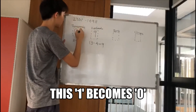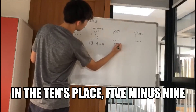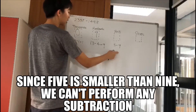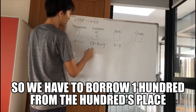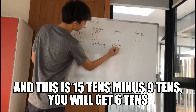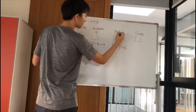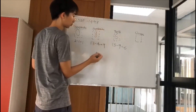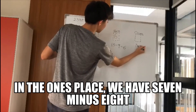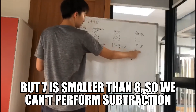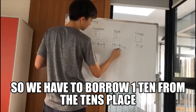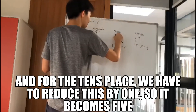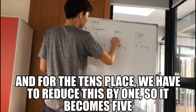This one becomes zero. In the tens place, five minus nine: since five is smaller than nine, we can't perform subtraction. So we have to borrow one hundred from the hundreds place — so we have ten tens. And this is fifteen tens minus nine tens, giving us six tens. This nine becomes eight. In the ones place, we have seven minus eight; seven is smaller than eight, so we borrow one ten from the tens place. We have seventeen minus eight, and that is nine. And the tens place is reduced by one, so it becomes five.